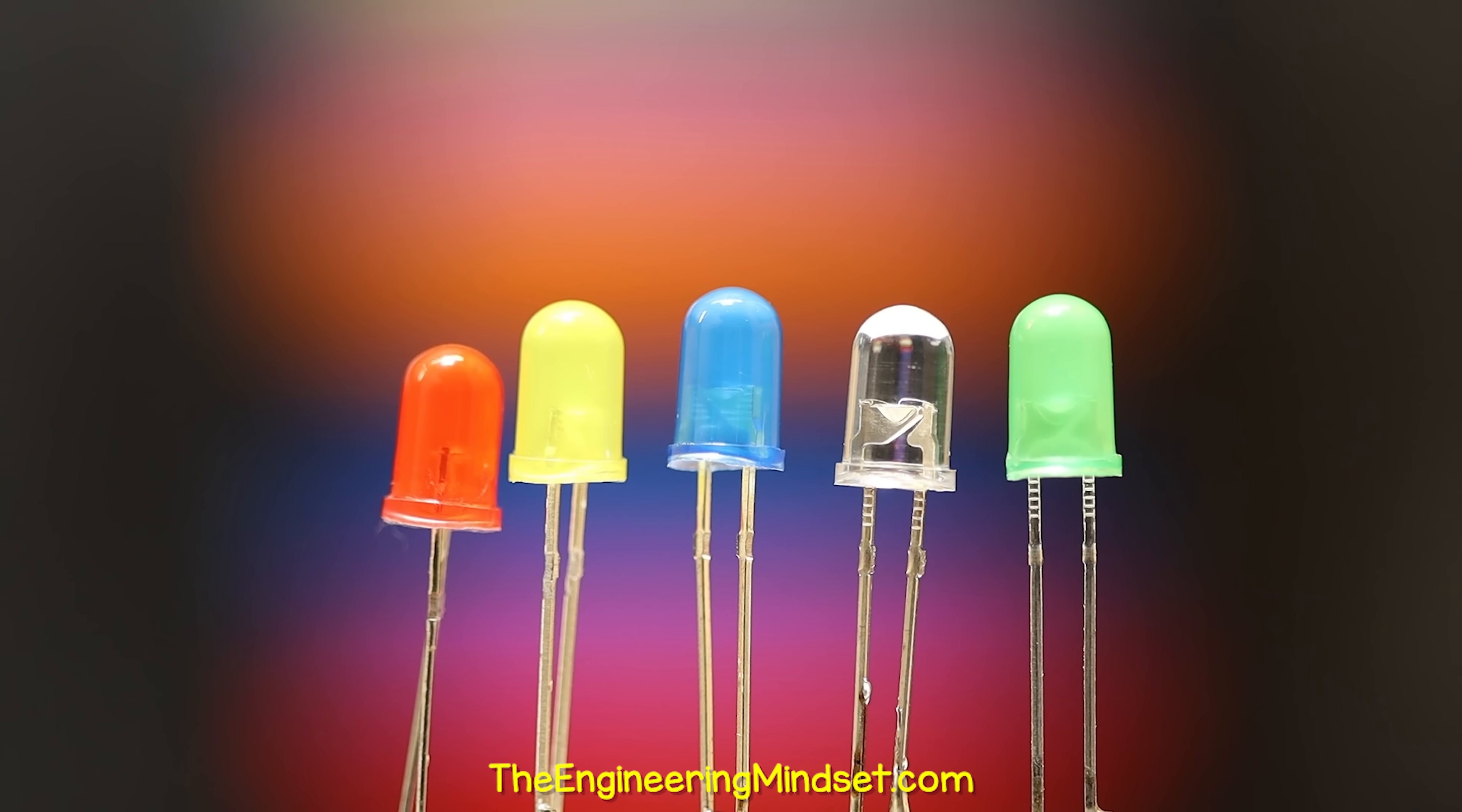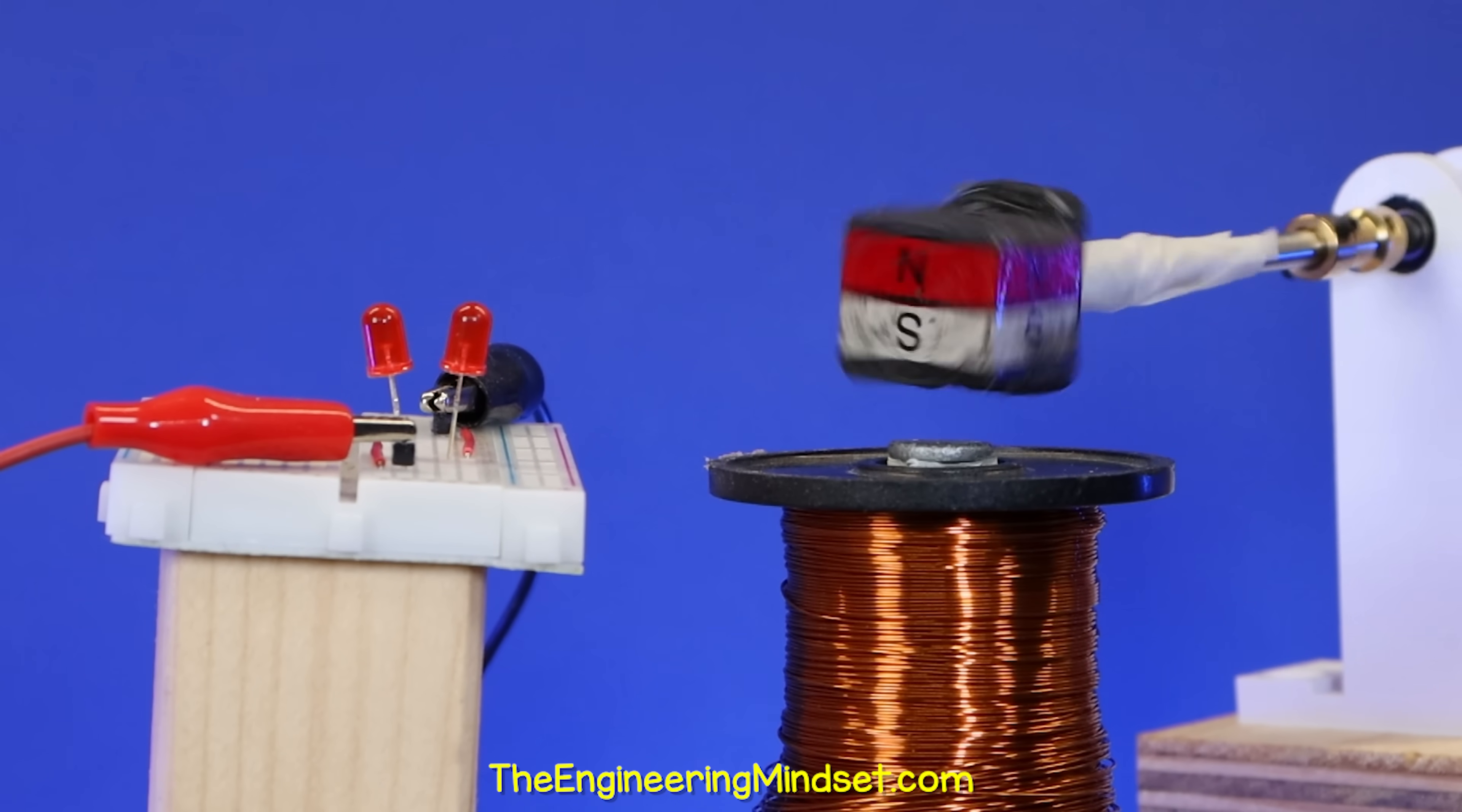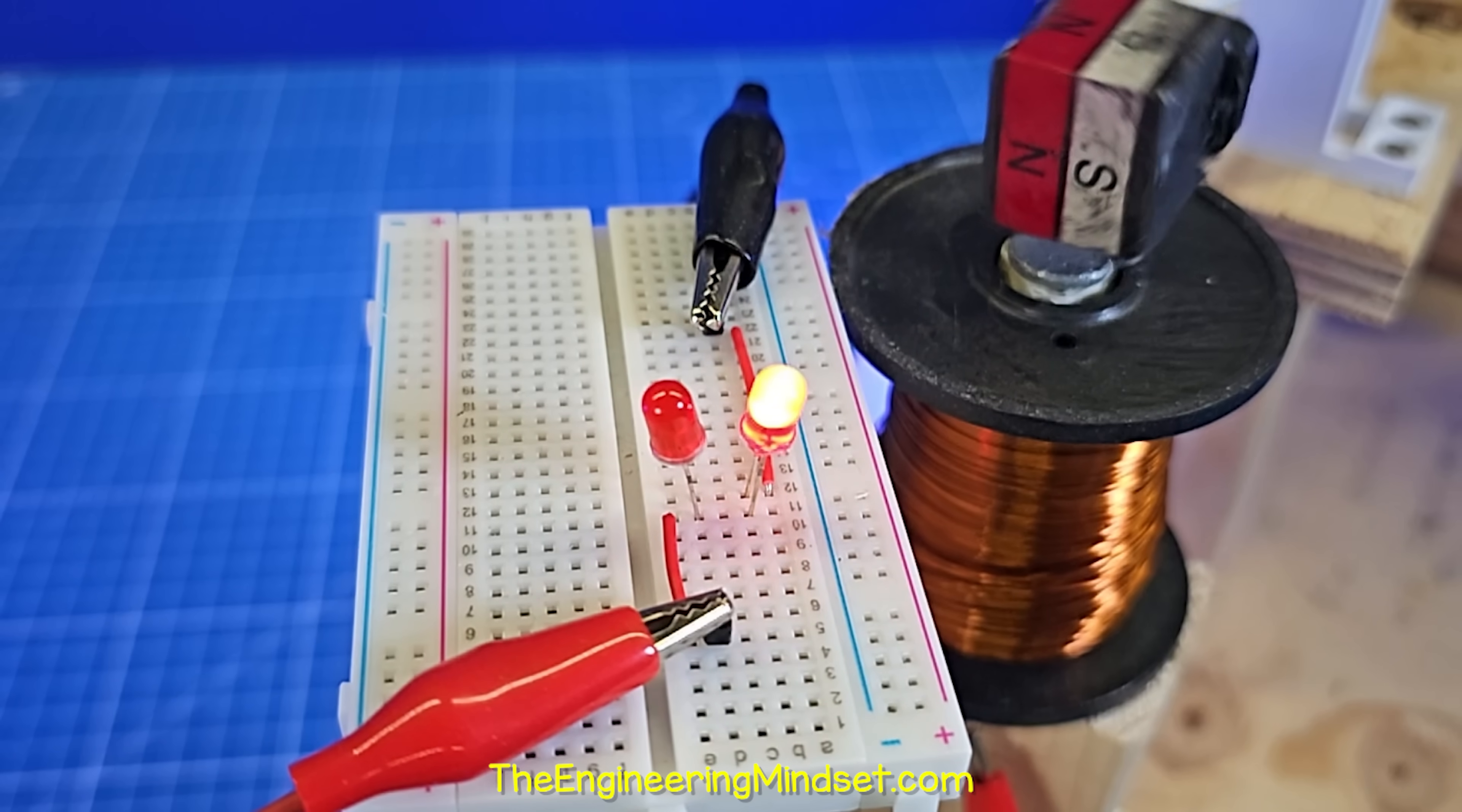To prove this we can use LEDs, because LEDs only allow current to flow in one direction. So by connecting two LEDs in opposite directions, we can tell which direction current is flowing. At normal speed it's a little hard to see, but in slow motion we can clearly see that only one LED illuminates at a time, so the current is definitely flowing forwards and backwards in the sine wave.